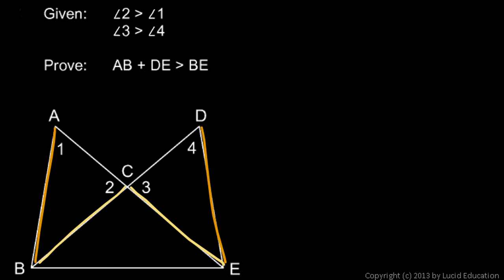The larger sides are marked in the darker colors. AB and DE are the larger sides. We can conclude that AB plus DE, the two big ones added together, must be larger than BC plus CE, the two small ones added together. The two larger things added together must be more than the two smaller things added together — that is the addition theorem of inequality, which we saw earlier in the chapter.